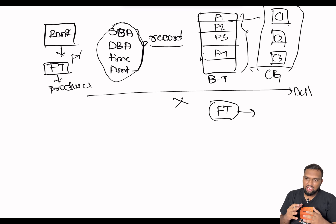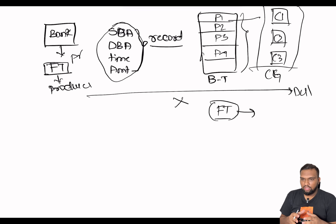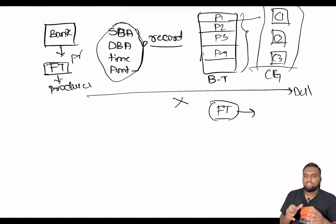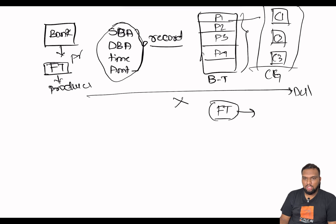To bring it all together: as fund transfer messages traverse through Kafka, they are efficiently processed by consumer groups, ensuring that accounts are updated accurately and in a timely fashion. The Kafka cluster, with its distributed architecture and fault tolerance mechanisms, forms the backbone of reliable and scalable data flow — orchestrating leaders, followers, partitioned messages, and coordinating brokers seamlessly.